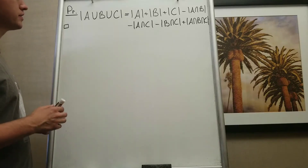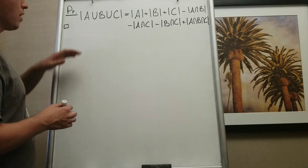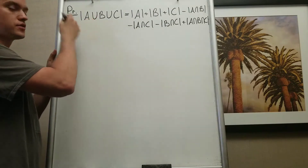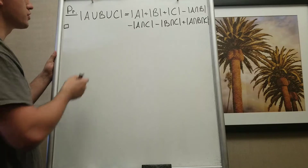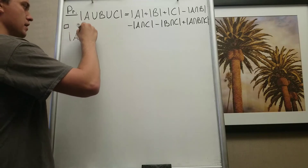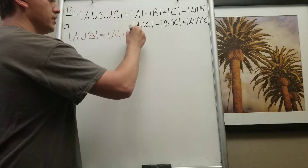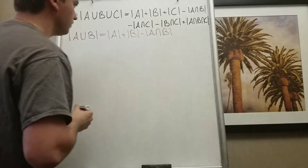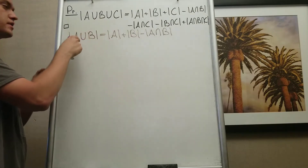Hello everyone. This is part 2 of proving the inclusion-exclusion principle. I want to prove this formula, and basically the idea of proving this formula for 3 sets is going to be the same idea as proving it for n sets. In the previous video I proved that |A ∪ B| equals |A| + |B| − |A ∩ B|. Now I want to think about how to prove this formula when adding a third subset.